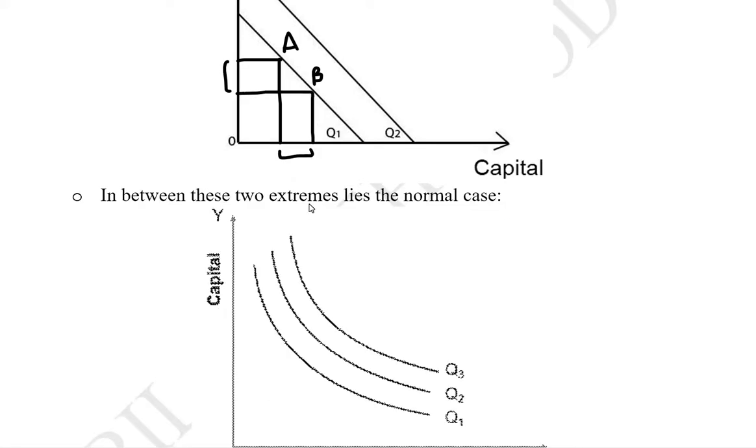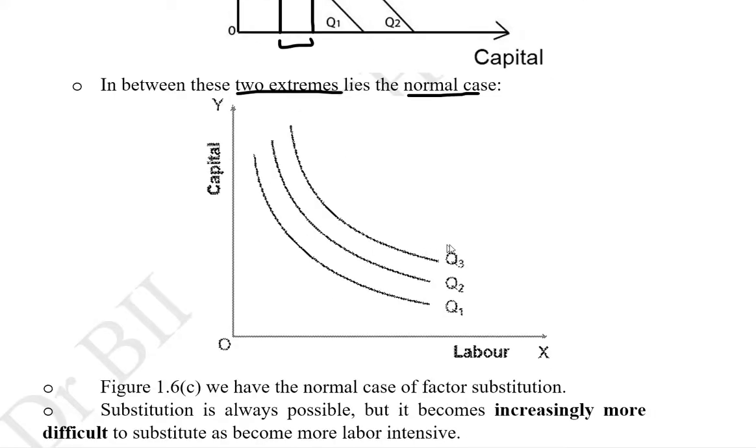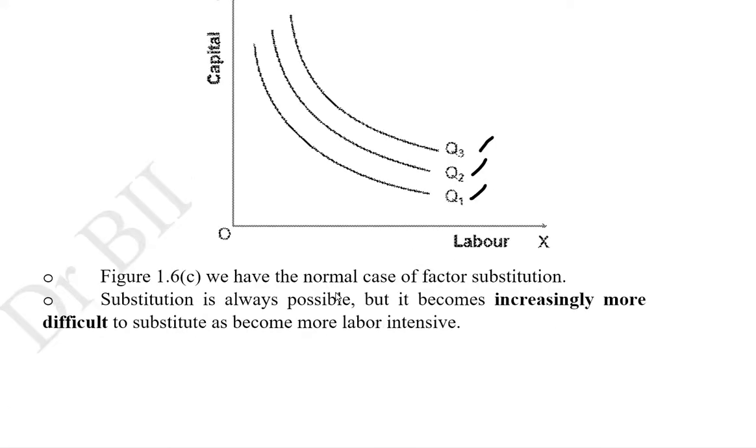The possibility between these two possibilities, that is these two extreme possibilities, we have a normal case. This is the case that we usually study where the indifference curves are plotted and they have a direction which is negative and they are also convex to the origin. We have a normal case of factor substitution and substitution is always possible but it becomes increasingly more difficult to substitute as we become more labor intensive.